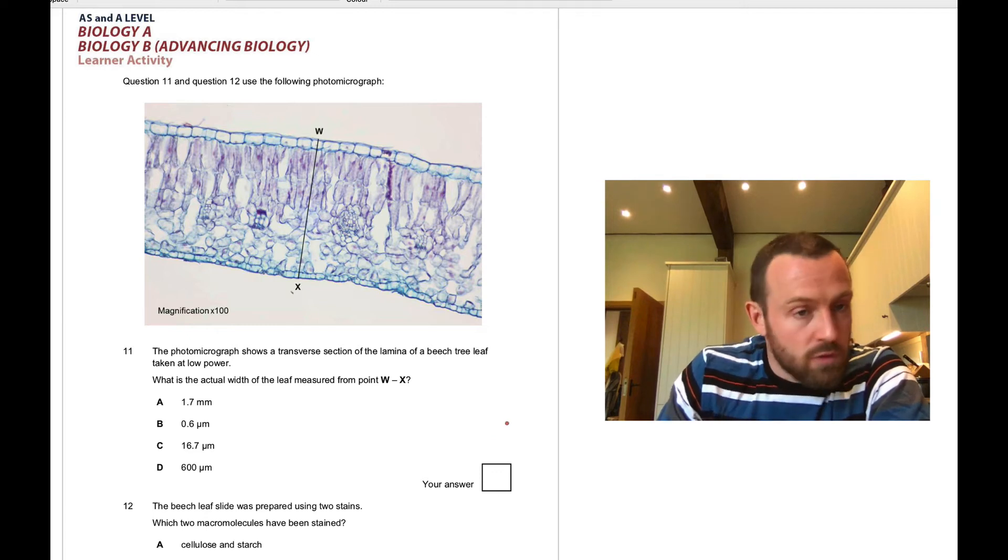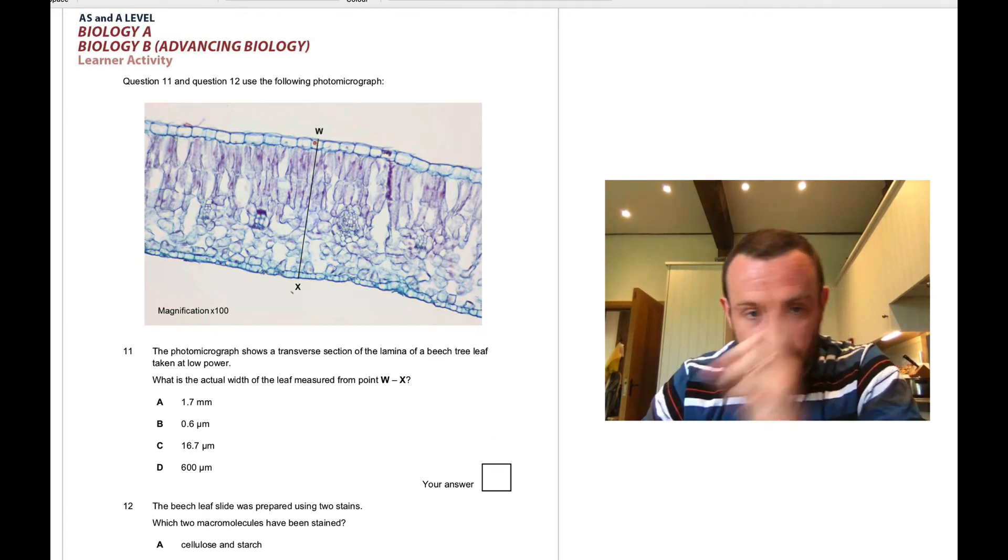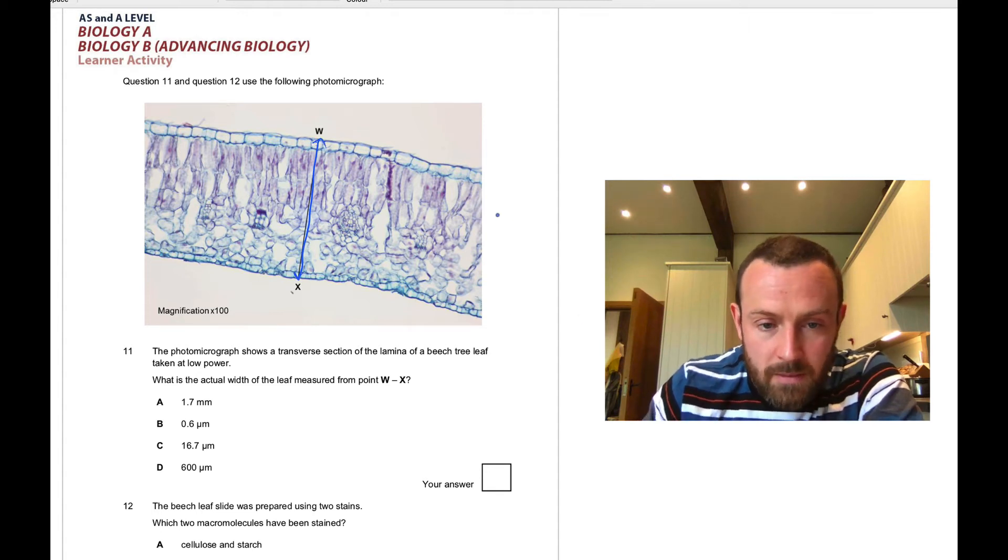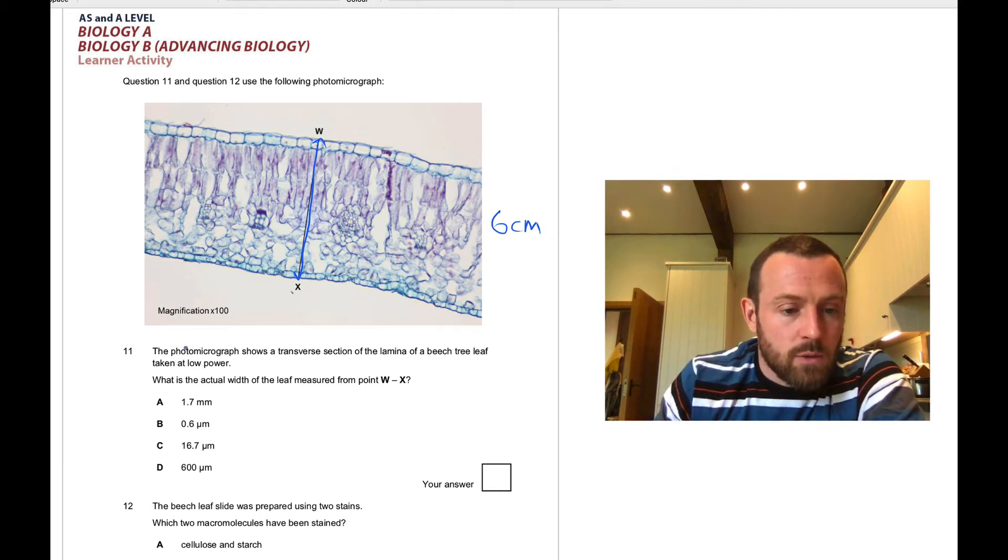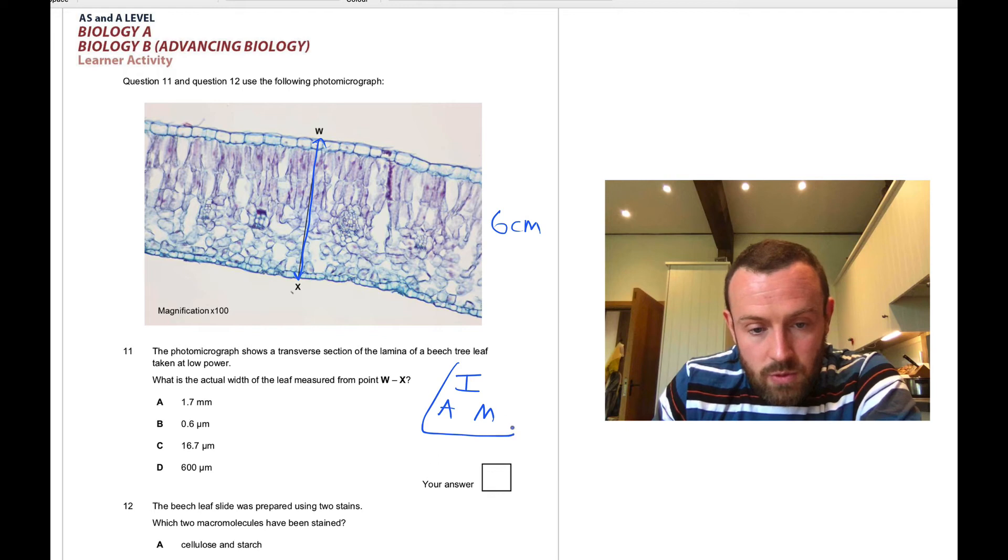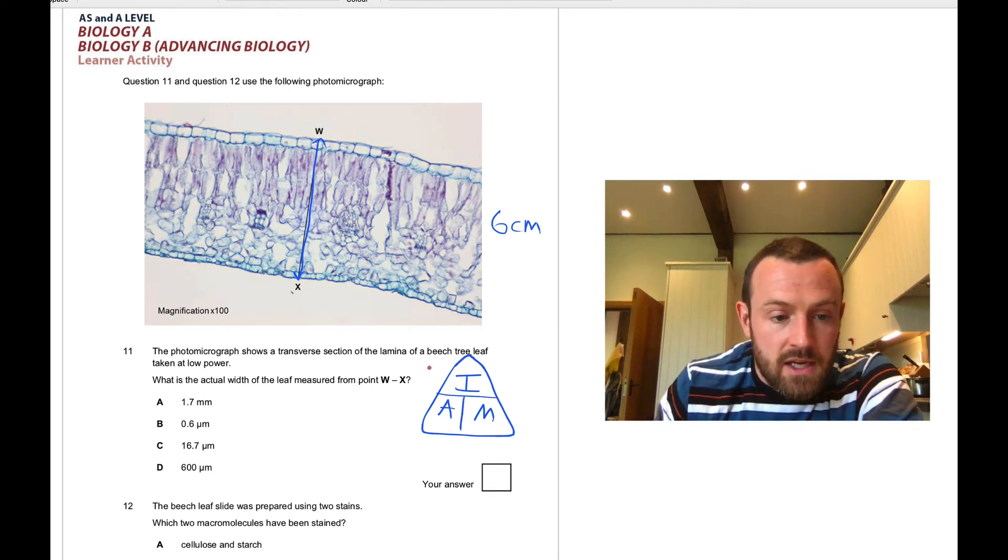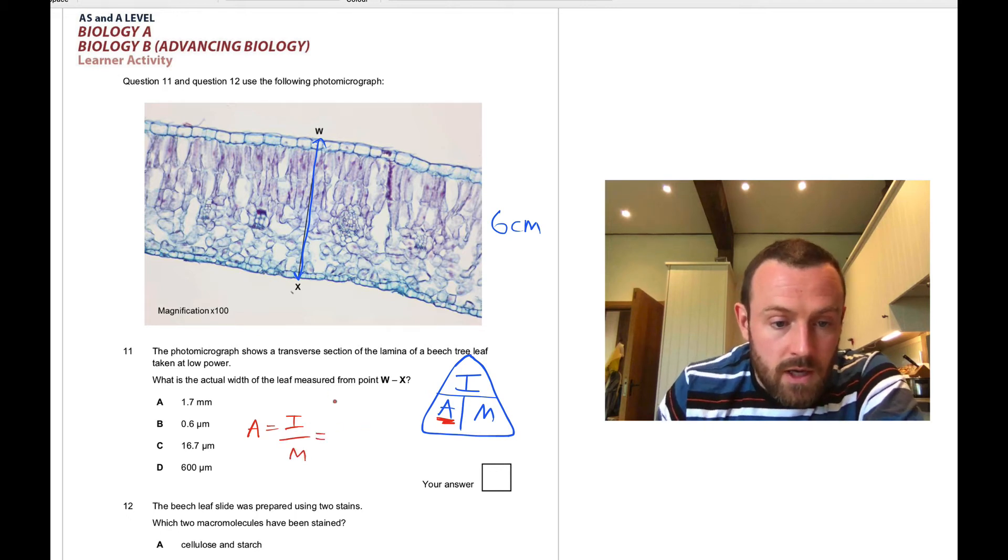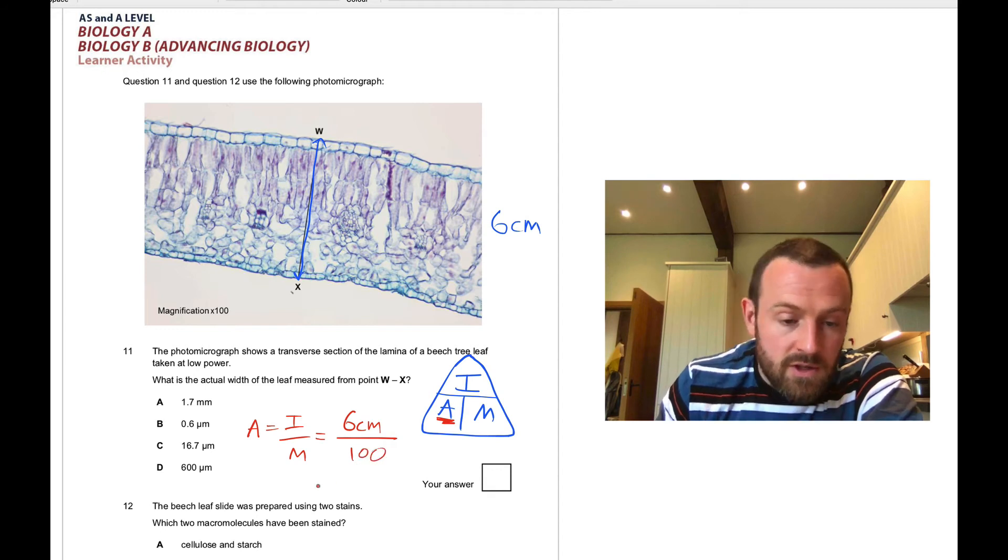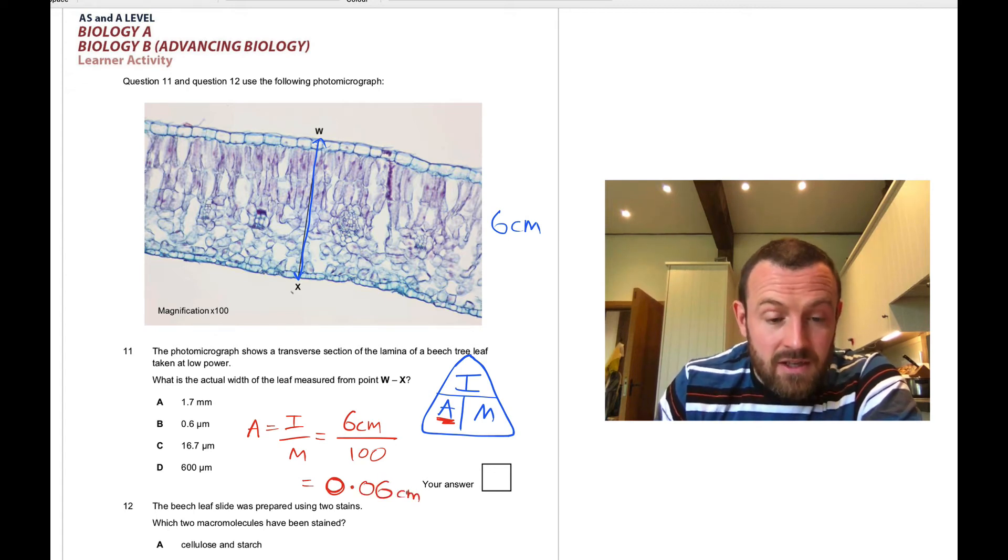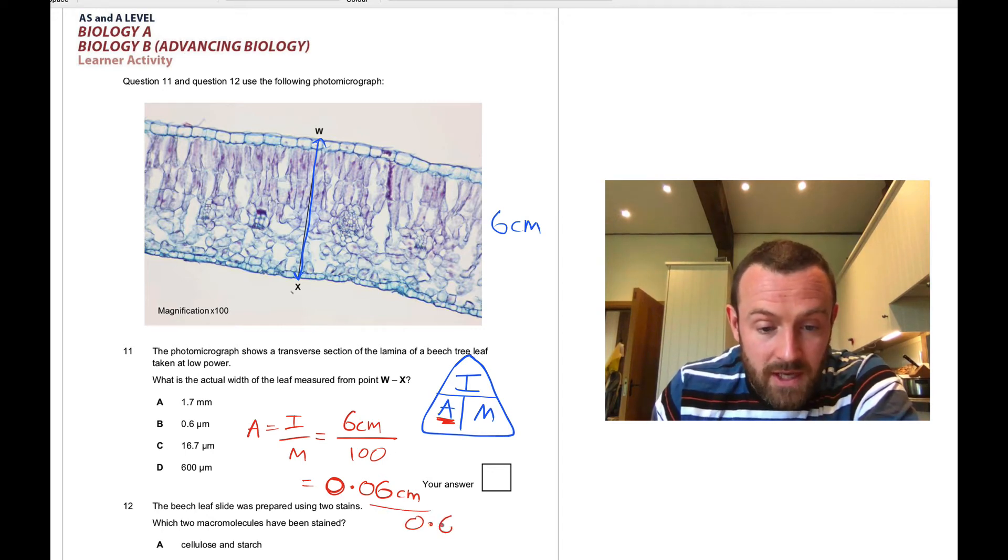Question eleven: for this one, whether you've got the right answer is kind of going to be dependent on your printer. If you printed this out and measured this line, W to X, you should have measured it as about six centimeters. How do we work out the actual width? We need to remember this IAM triangle. That stands for image, actual, and magnification. What we're trying to work out is the actual size, so actual equals image divided by magnification. The image is six centimeters divided by 100, so six centimeters divided by 100 is 0.06 centimeters. Converting that, it would be 0.6 millimeters or 600 microns. The answer is D.